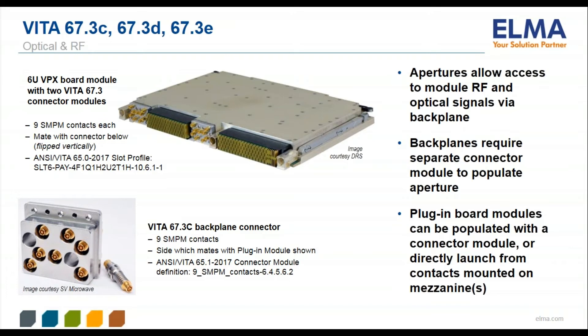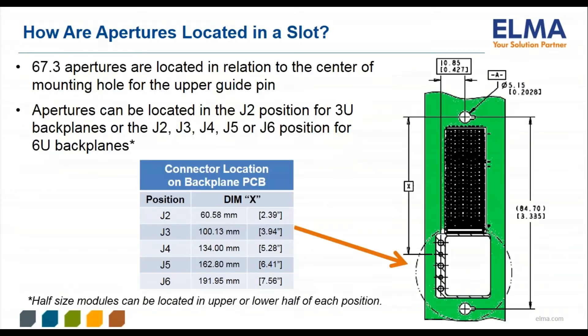This 6U plug-in module example shows a Vita 67.3 connector module in the J3 and J6 locations. The illustration on the right is from the Vita 67.3 standard, and it shows a 3U slot profile with a Vita 67.3 C module located in place of the J2 connector. The table shown defines the locations of each possible aperture location within this 3U or 6U slot.